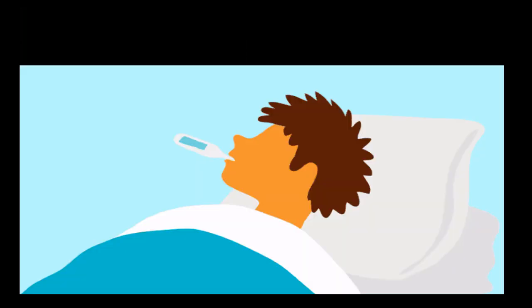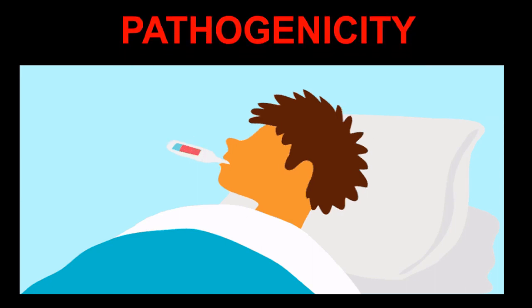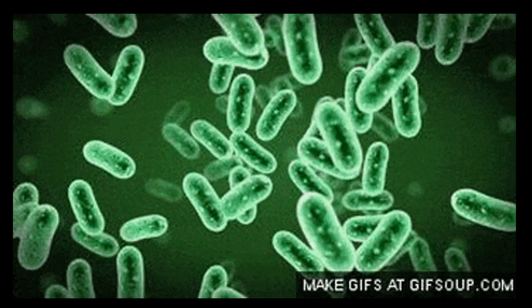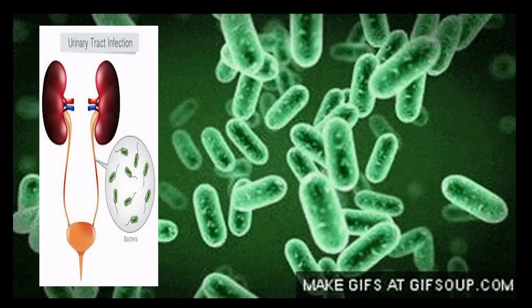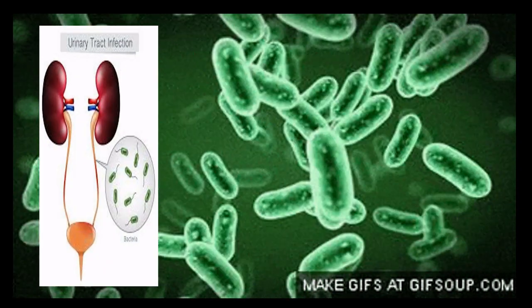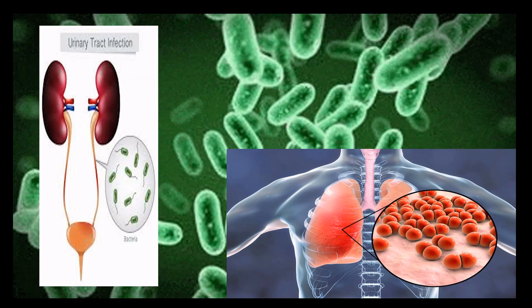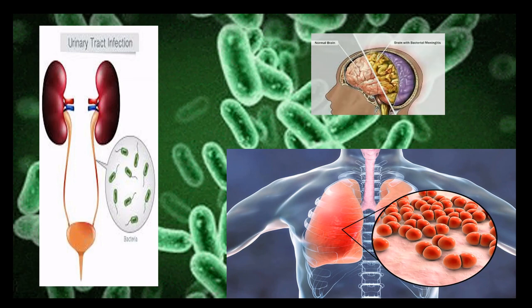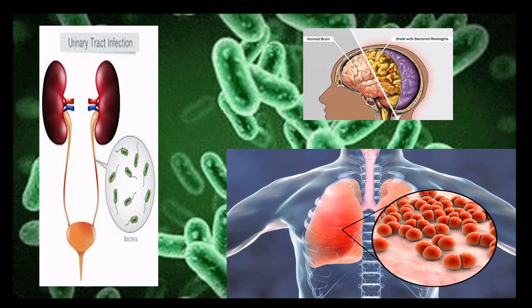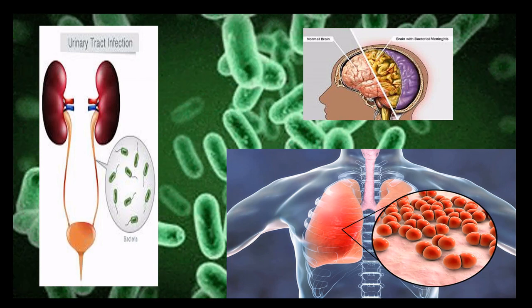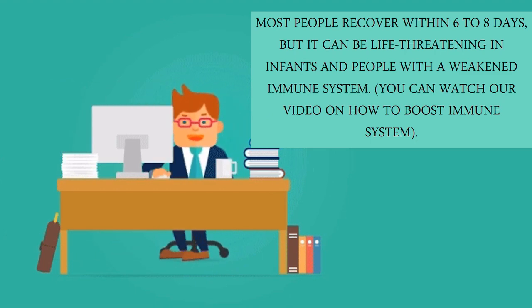Pathogenicity: Some other types of E. coli infections can lead to UTI (urinary tract infection), respiratory illness, pneumonia, and other illnesses like meningitis. Most people recover within six to eight days, but it can be life-threatening in infants and people with a weakened immune system.